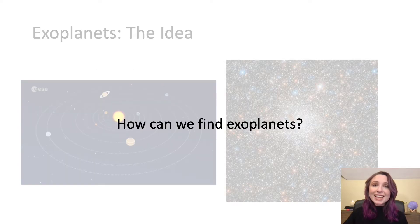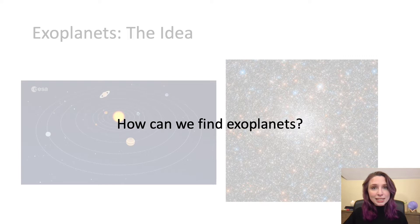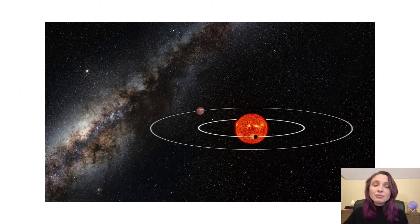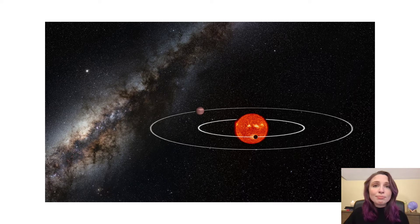Once these astronomers had the idea that exoplanets might exist, they had to ask themselves how they were going to find them. Now they thought, and you might think, that you could just take a telescope and look for them. If exoplanets are out there orbiting around their stars, maybe we'll just see them.